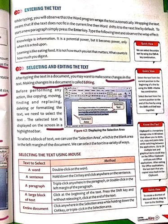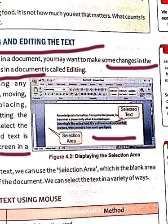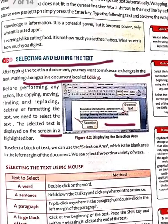The selected text is displayed on the screen in a highlighted bar. When you select it, it will be highlighted in the whole text. For example, 'learning is like eating food' — you can see that it is highlighted with a blue color. This is called selecting. This is the process of selecting.